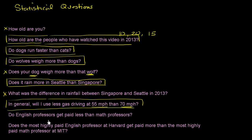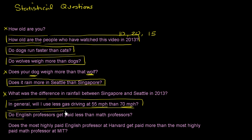Do English professors get paid less than math professors? All English professors don't get paid the same amount, and all math professors don't get paid the same amount. Some English professors might do quite well, some might make very little — same for math professors. We'd want to find some type of average to represent the central tendency for each group. This is a statistical question.